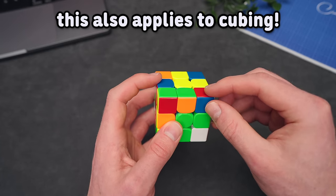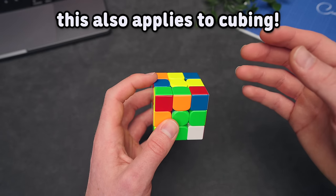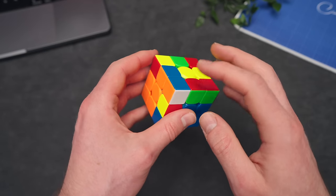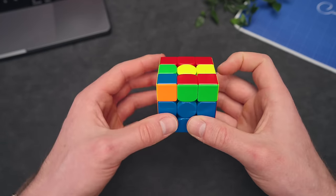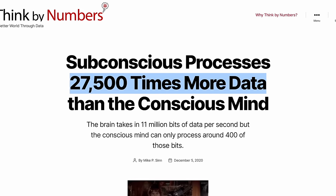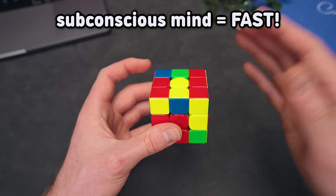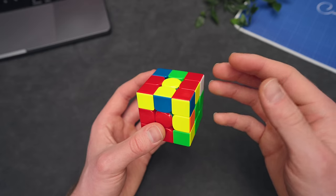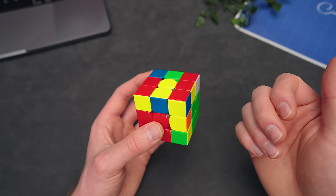If you've solved pairs a lot of times, and with that, I mean, at least having done like multiple solves, you automatically do stuff and you don't really think about it because you've done it so many times. And this is because your subconscious mind is way faster than your conscious mind. Once you don't have to think about stuff and automatically do them, you can solve pieces way faster.